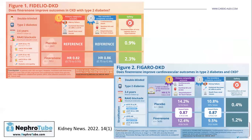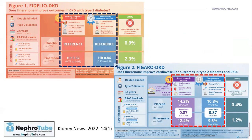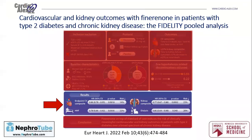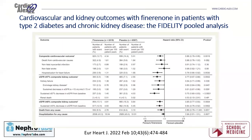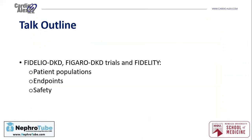What were the results? Both studies showed that finerenone was effective for both kidney and cardiac outcomes. For the composite cardiovascular endpoint, there was a 14% risk reduction in patients who received finerenone. For the composite kidney outcome, there was about a 23% risk reduction in patients who received finerenone. Looking at each individual component of the composite outcomes, there was a benefit from finerenone for each individual cardiovascular and renal endpoint.